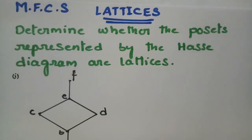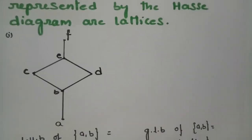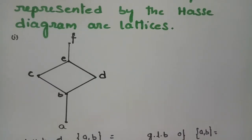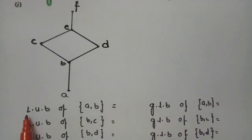In today's video I am going to explain the problems from lattices. This topic is from mathematical foundation and computer science. These are the most important but very simple to solve. We have to determine whether the posets represented by the Hasse diagram are lattices. For being a lattice, every pair of elements of a poset should have a least upper bound and the greatest lower bound — that is, every pair of elements should have an infimum and supremum.